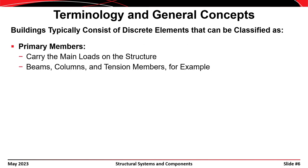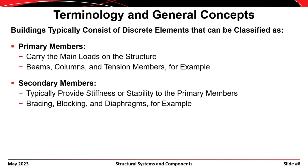Building components can also be classified as primary members or secondary members. Primary members are members that directly carry the loads in the structure — so beams, columns, and tension members are examples of primary members. Secondary members often don't carry load directly, but are provided to give stiffness or stability to the members that do carry the load, such as bracing, blocking, and diaphragms.